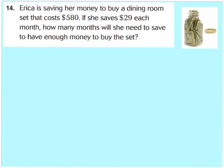Let's look at our word problem number 14 at the bottom. It says Erica is saving her money to buy a dining room set that costs $580. If she saves $29 each month, how many months will she need to save to have enough money to buy the set? We know that it costs $580 and she saves $29 each month. Let's pick a good reasonable estimate. If I have 5 hundreds, I cannot put a hundred in each of my groups of 29. So I'm going to look at my tens place. I have 58 tens. I'm going to guess about 2. I can adjust the quotient if I multiply and see I'm wrong.